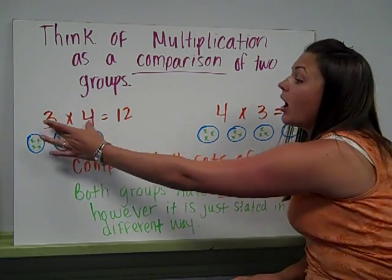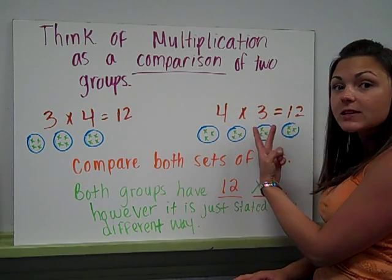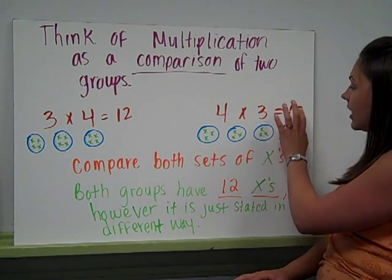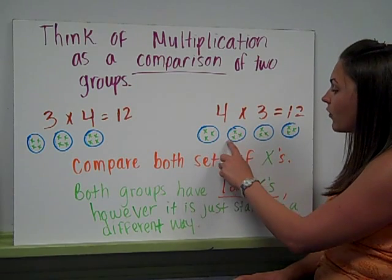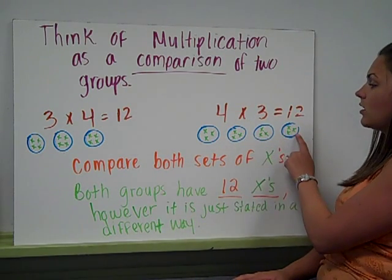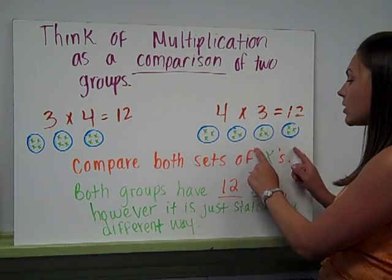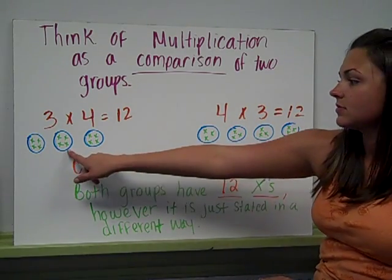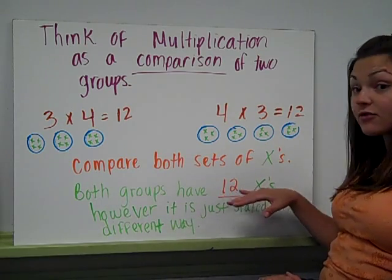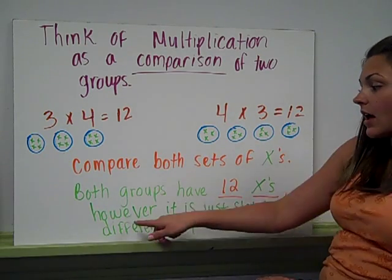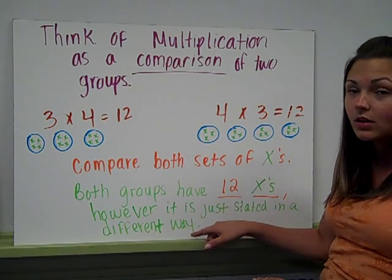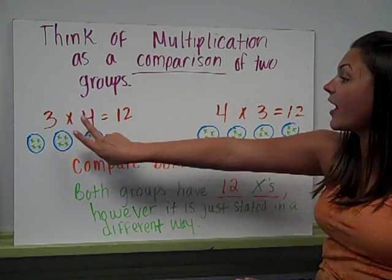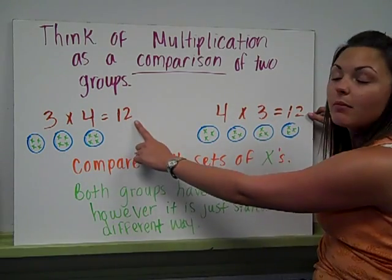Over here, it's the same problem. I'm flipped around because the commutative property says I can do that and it still equals the same product. I have 4 groups of 3 and I still get 12. I'm comparing the two because 4 groups of 3 is the same thing as 12. When you compare both sets of x's, this set to this set, both groups have 12 x's inside of them. However, it's just stated in a different way. Here I have three groups with four in each. Here I have four groups with three in each. Just flip-flop the factors. However, I get the same product.